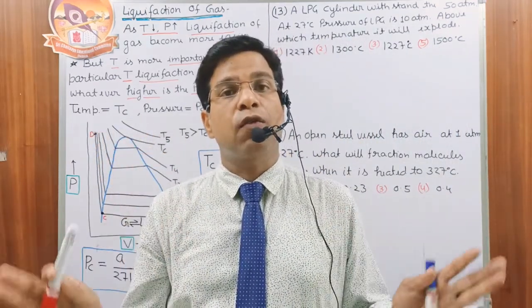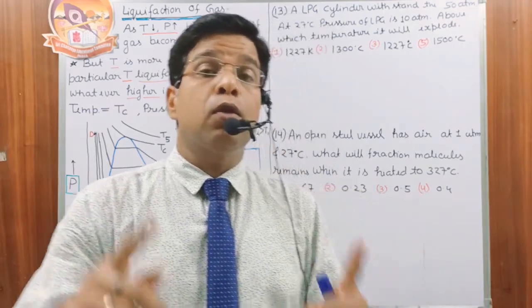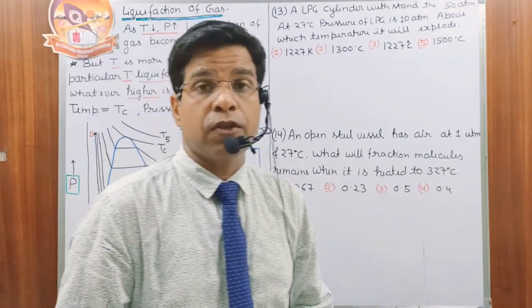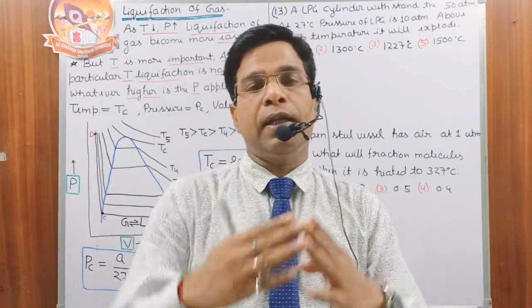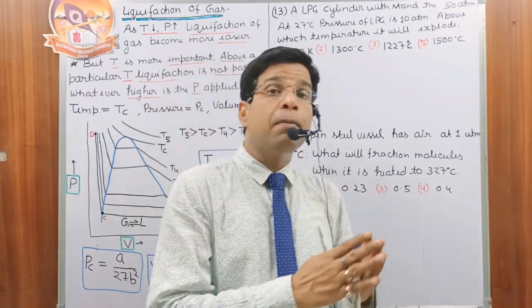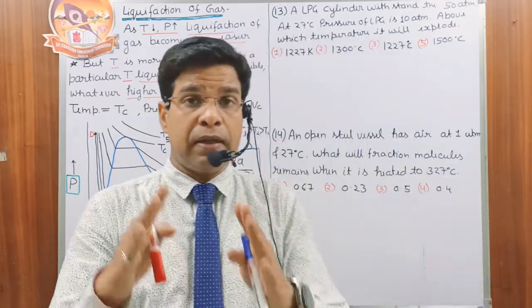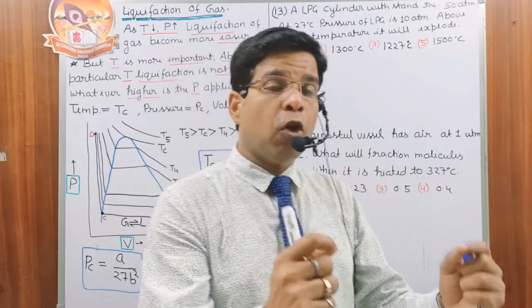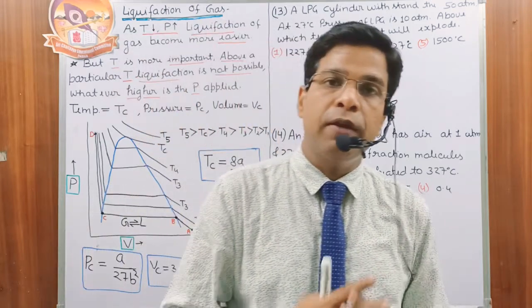At the critical temperature, we can liquefy the gas, but above critical temperature, liquefaction is not possible. The pressure applied at the critical temperature to liquefy the gas is called the critical pressure. The volume occupied by the gas under the conditions of critical temperature and critical pressure is called the critical volume.